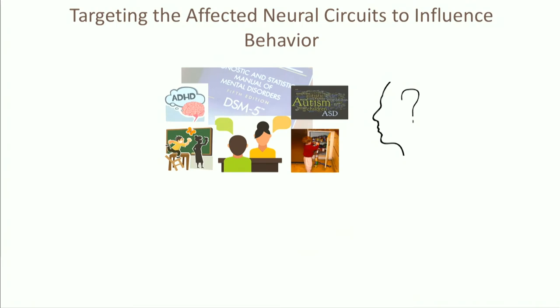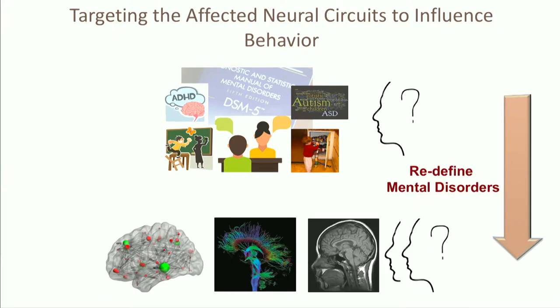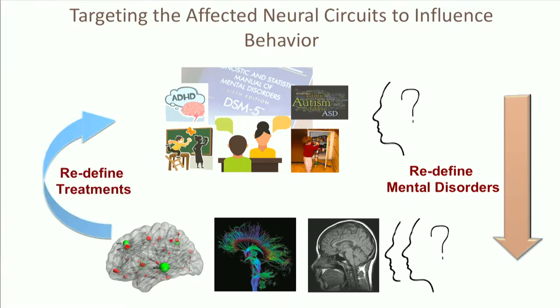The next step is that instead of defining mental disorders at the behavioral level — if you're familiar with the movie Inception — we can go one level down and try to redefine those disorders at the brain circuit level. That's not the ultimate solution, but it's one step ahead. More importantly, how can we translate that knowledge and use it to redefine treatments?